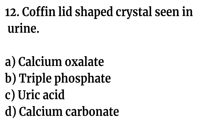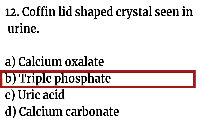Question number twelve: Coffin lid-shaped crystals seen in urine — Option A: calcium oxalate. Option B: triple phosphate. Option C: uric acid. Option D: calcium carbonate. The right answer is Option B: triple phosphate. Coffin lid-shaped crystals are triple phosphate.